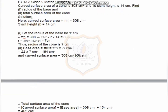Question number three: the curved surface area of a cone is equal to 308 centimeters square and the slant height is 14 centimeters. First we have to find the radius of the base and then find the TSA of the cone. Curved surface area equals π r l, which equals 308. We know the values of π and l, and we have to find the value of r.